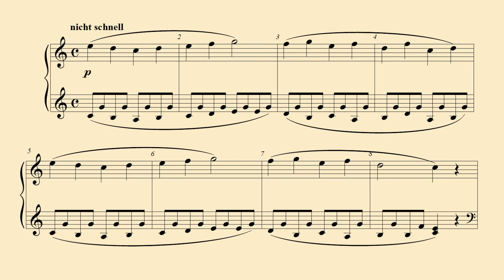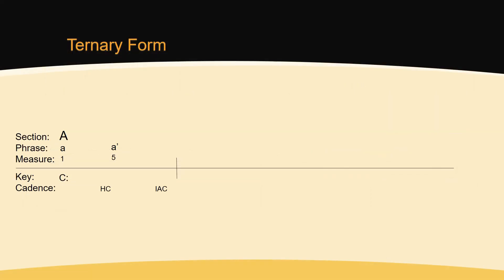The first section begins in C major. The opening phrase lasts for 4 measures and ends with a half cadence in measure 4. The second phrase begins in the same way as the first, lasts for 4 measures, and ends with an imperfect authentic cadence in measure 8. The opening 8 measures represent a parallel interrupted period. Because the opening 8 measures do not modulate, this section is closed.